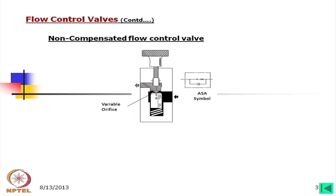Looking at this figure, this is a non-compensated flow control valve. It can work in both ways: in one way it is free flow through a check valve, and in the other way it is a flow control valve or throttle valve. Consider flow from right side to left side. The pressurized oil is coming through and passing through this orifice and going to the left side. This orifice is variable; the area can be controlled by rotating the knob.